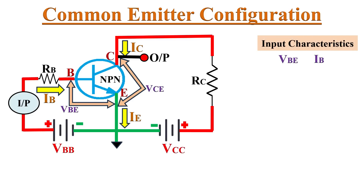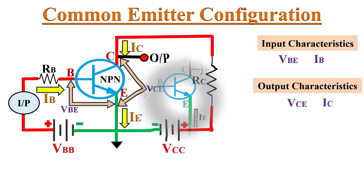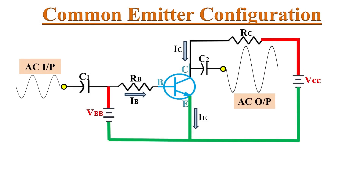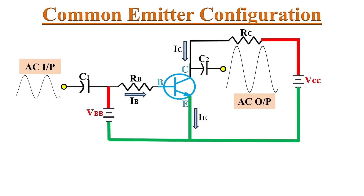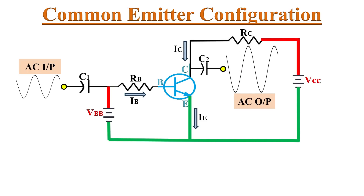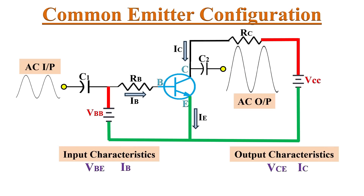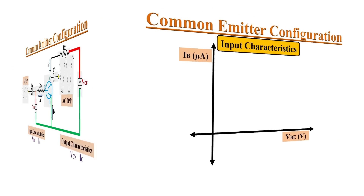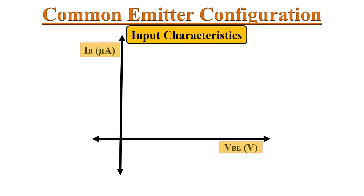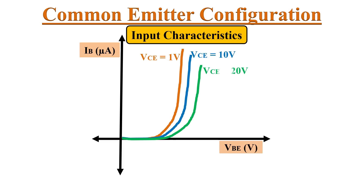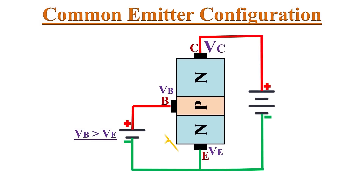Hence VBE and IB are the input characteristics, and VCE and IC are the output characteristics of this circuit. If we apply a sine wave input between base and emitter terminal, we will get an amplified output between the collector and emitter terminal. To understand this circuit clearly, we need to understand its input and output characteristics. The input characteristics defines the relationship between the base current IB and the voltage VBE. We can see different IB versus VBE curves for different values of VCE. These curves are very similar to the PN junction forward characteristic curves, because the input side — the base-emitter junction — is forward biased.